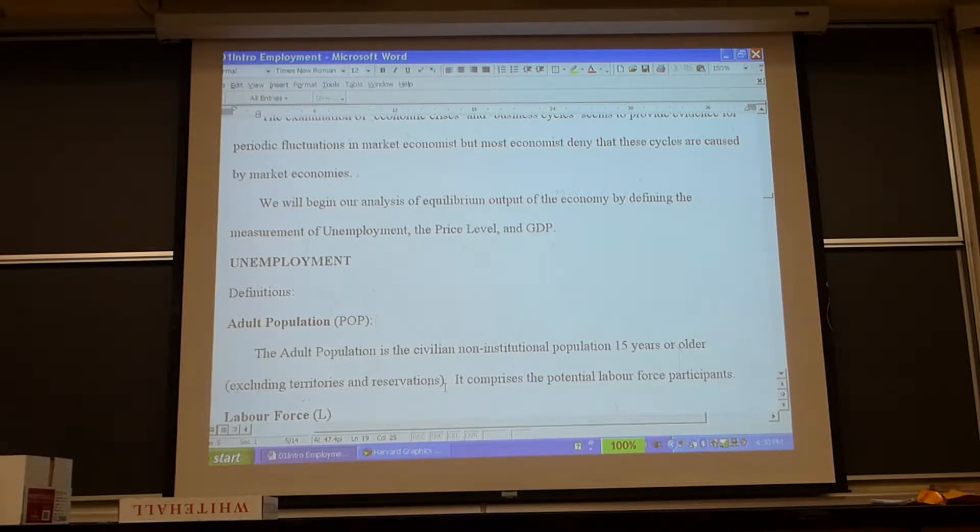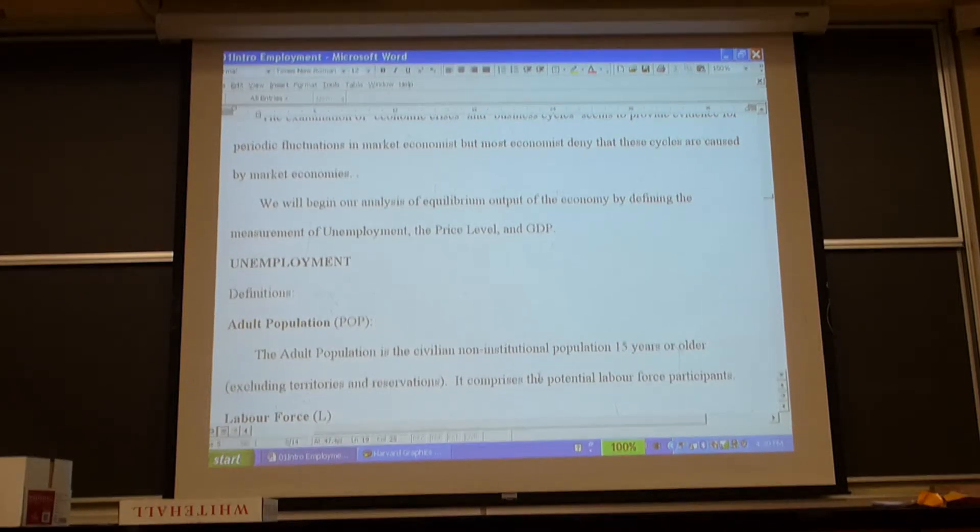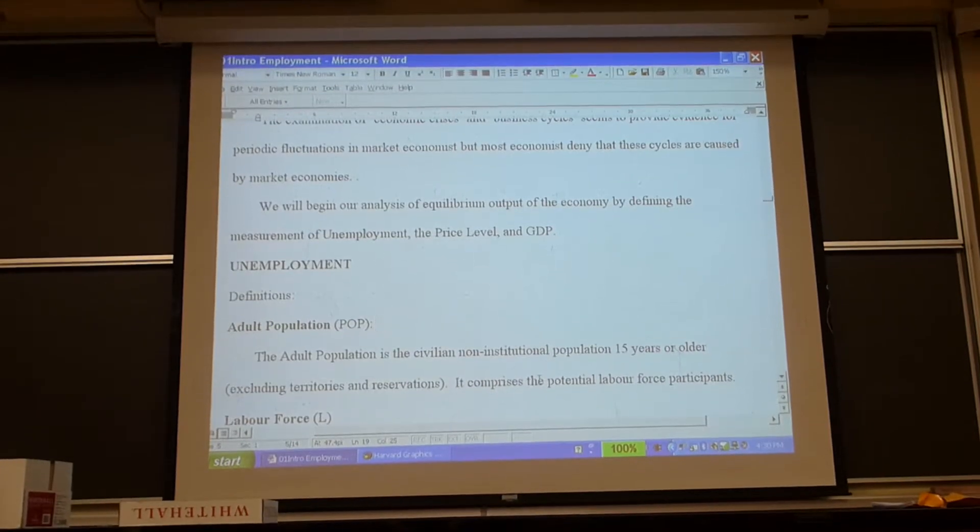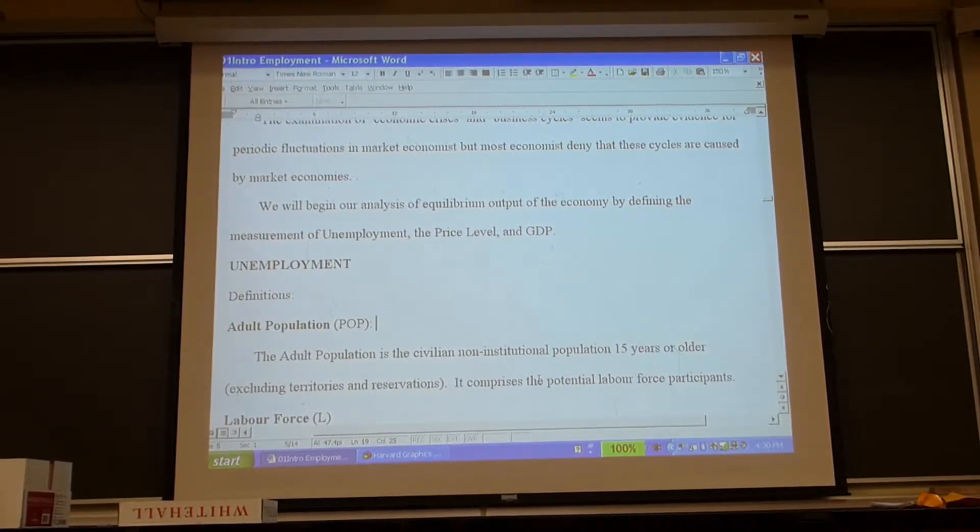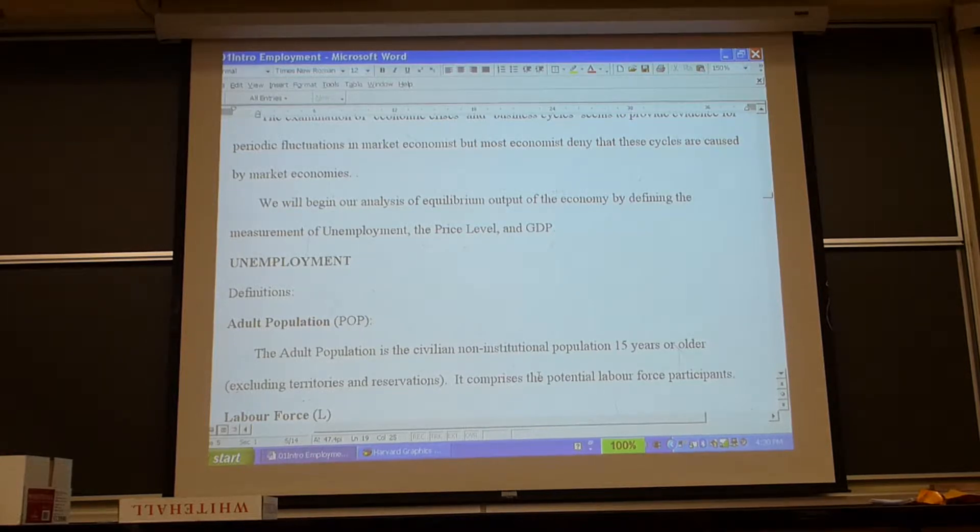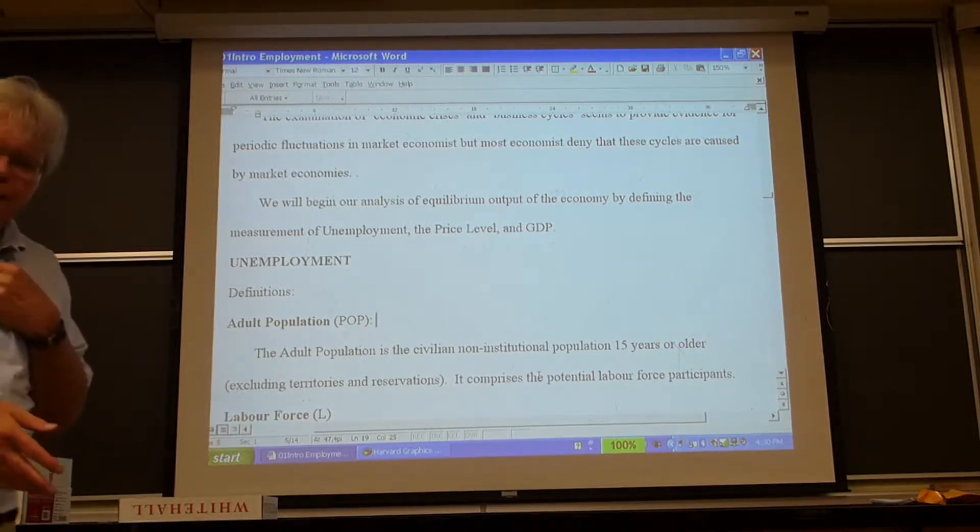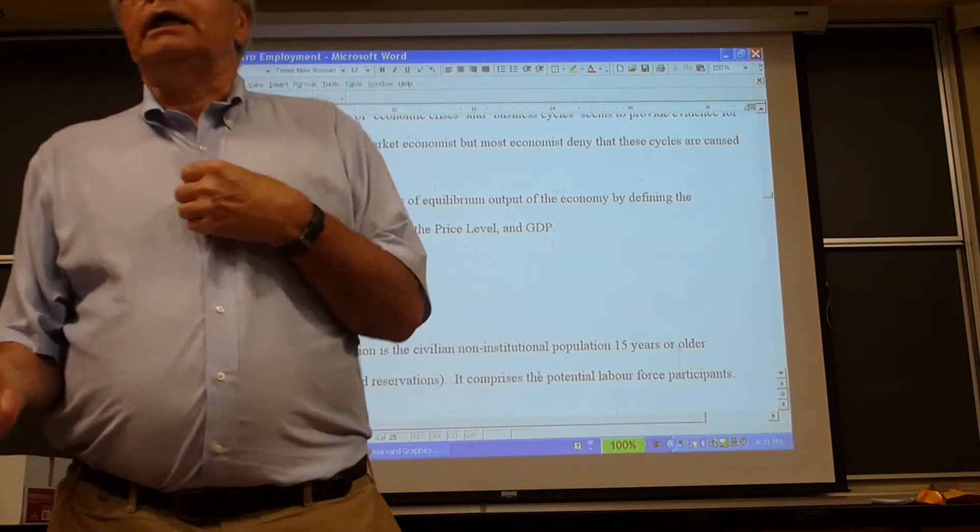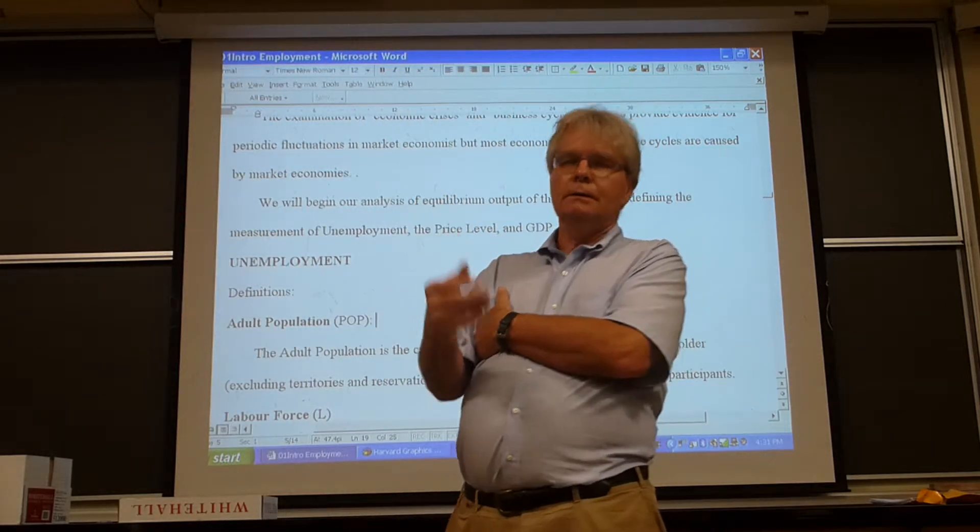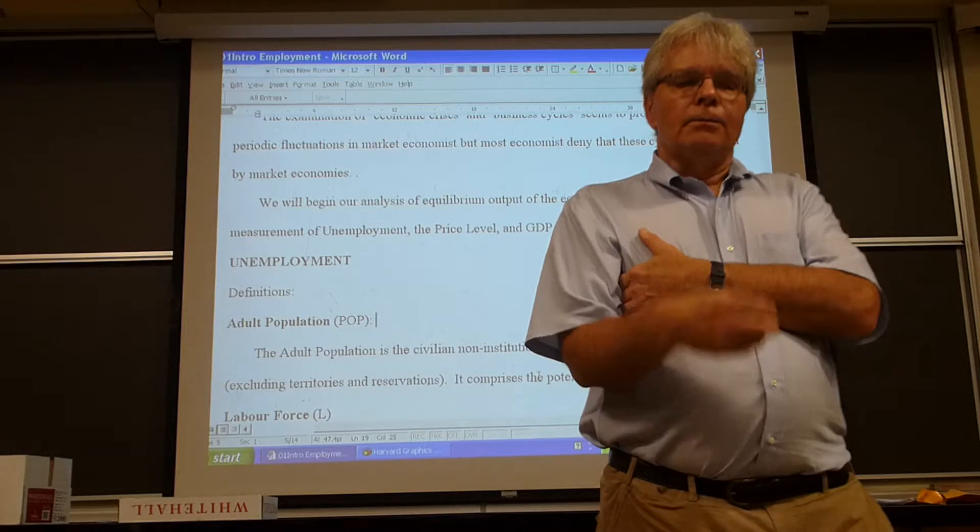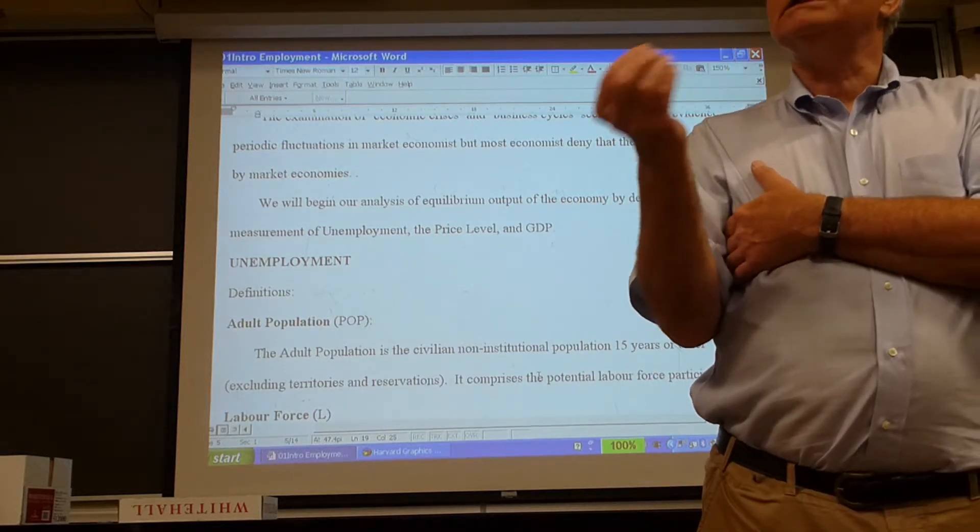What is unemployment? What does it mean for the population to have 7% unemployment, 10% unemployment? We first of all explain the adult population. The adult population, in the US it's 16 years or older. In Canada it's 15 years or older, excluding territories and reservations. Essentially the civilian non-institutional population. What that means is everybody in Canada who's more than 15 and essentially able to work. If you're 95 years old and you're not in an old folks home and you're not in the military, you're not in jail, you're not on a reservation, and you want to work, you're part of the adult population.